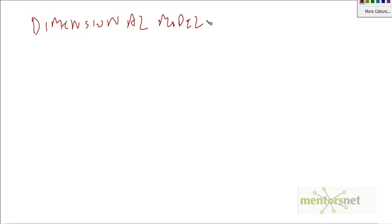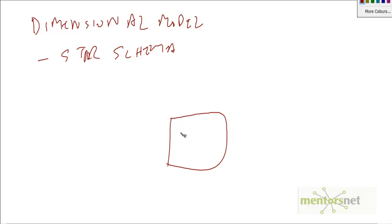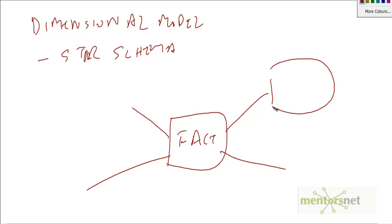Today we are going to talk about some data warehousing concepts. The first of which is called dimensional modeling. This is a kind of model that is very different from the entity relationship model seen in OLTP systems. This model is very simple. It's also called a star schema, because the tables look like a star. There is one central table called a fact, which is surrounded by several different dimension tables.